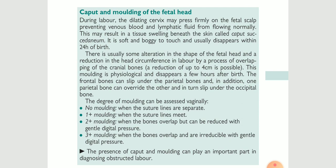During delivery, there are sutures and fontanelles, which are soft membranous tissues that help in the overlapping of the bones. The bones come close when externally pressed by the birth canal, when the baby is pushed by uterine contractions toward and out of the birth canal.